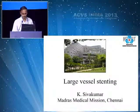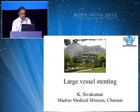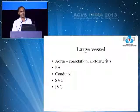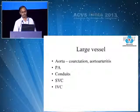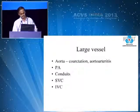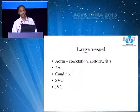About large vessel stenting — what we call large vessels are either the aorta or the pulmonary artery. Sometimes when you put conduits from the right ventricle to the pulmonary artery, these are also referred to as large vessel stents, as are the superior and inferior vena cava.